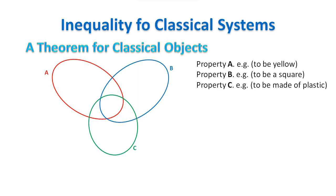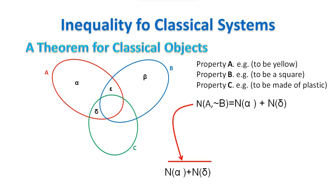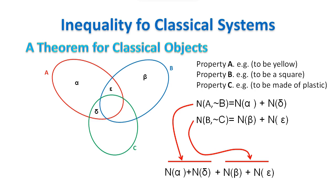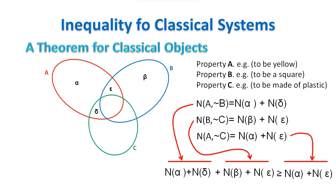In each region of the diagram we have a set of objects having different combinations of properties. Some of these sets may be the empty set. We label some of these sets with Greek letters. We want to prove that the number of objects having property A and not having property B, which is the union of set alpha and delta, plus the number of objects having property B and not having property C, which is the union of set beta and epsilon, is greater than or equal to the number of objects having property A and not having property C, which is the union of set alpha and epsilon.